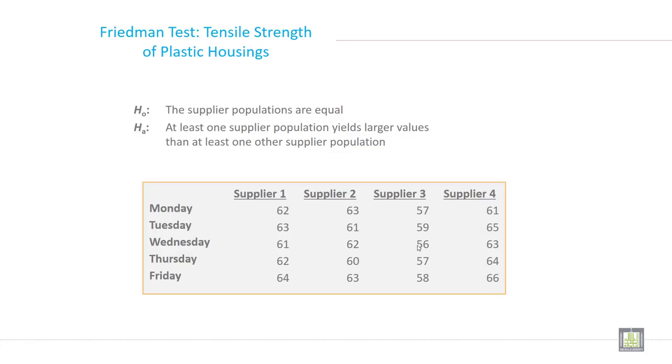As we have seen the example, let's discuss about what will be the null and alternate hypothesis in the Friedman test.